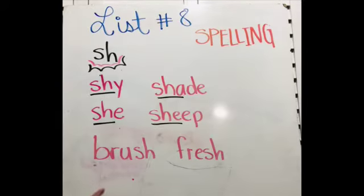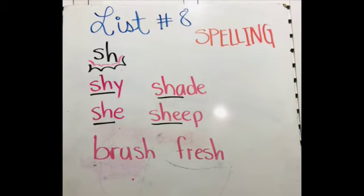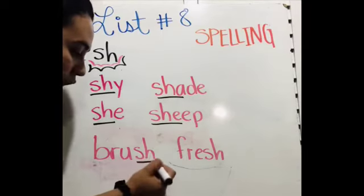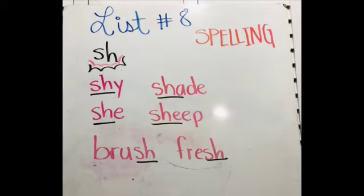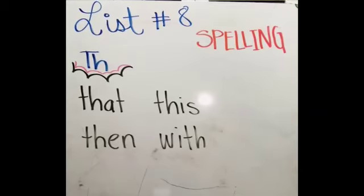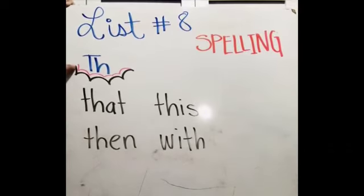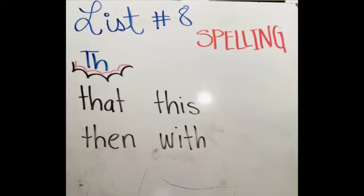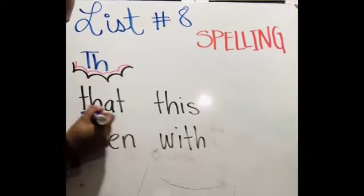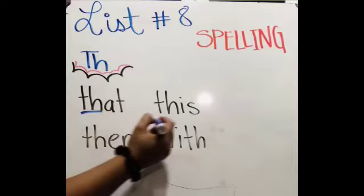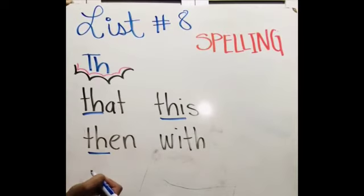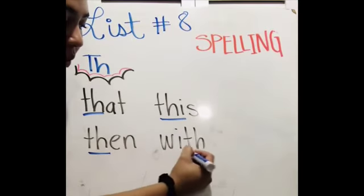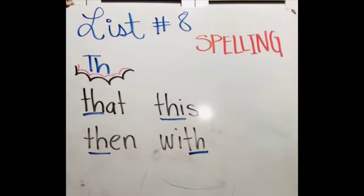Now we have the SH sound at the end, like in brush, fresh. Now we're going to see the words that have the TH sound — TH, TH. For example, we have that, this, then, and at the end, with.